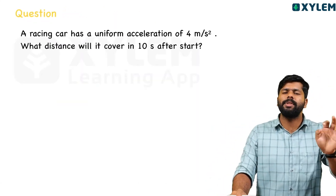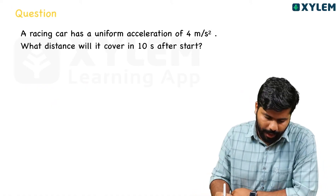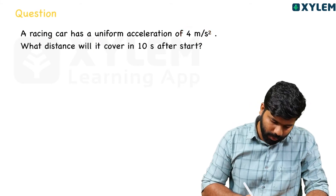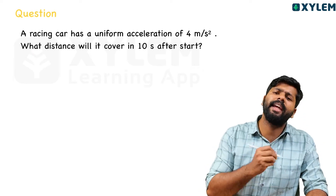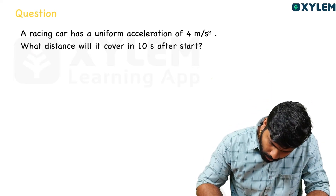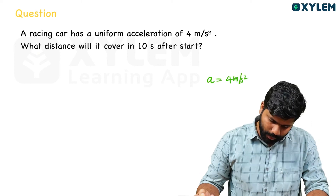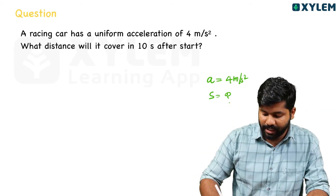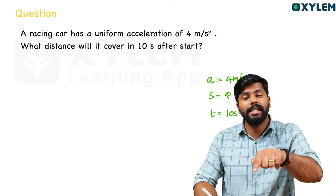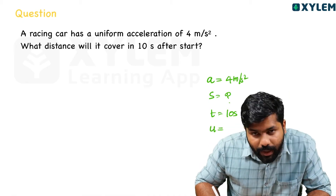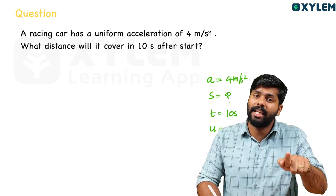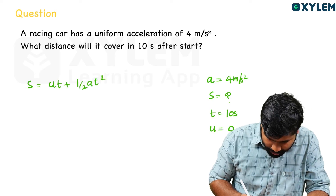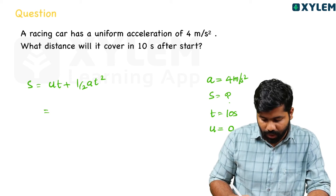This next question is for you to solve — we will discuss the answer in the comment box. A racing car has a uniform acceleration of 4 m/s². What distance will it cover in 10 seconds after start? Since it starts from rest, u equals 0. Use s equals u·t plus half a·t²: s equals 0 plus half into 4 into 10².